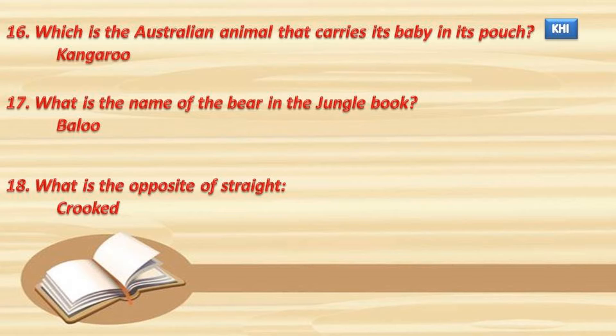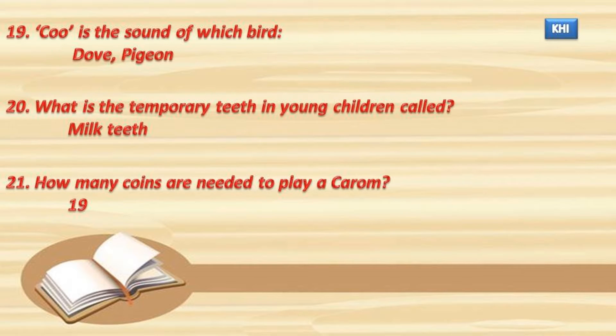18. What is the opposite of straight? Crooked. 19. Coo is the sound of which bird? Dove, pigeon.